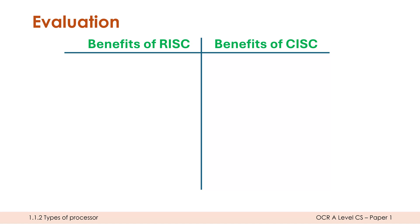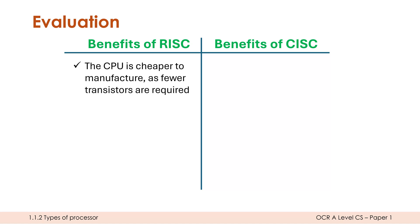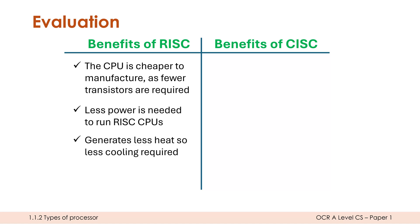Both designs have benefits and drawbacks. Key benefits of RISC — which are corresponding drawbacks of CISC — include: the simpler hardware makes the CPU cheaper and easier to manufacture using fewer transistors. With fewer circuits the CPU uses less power and less electricity, which is why it's favoured in mobile devices where battery life matters. Using less power also means less heat is generated, so less cooling is required.